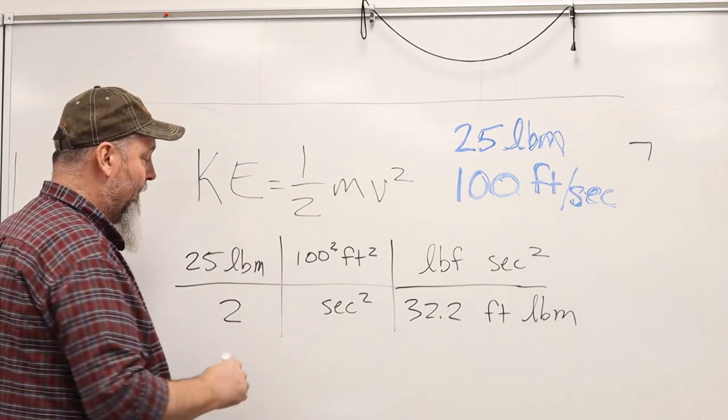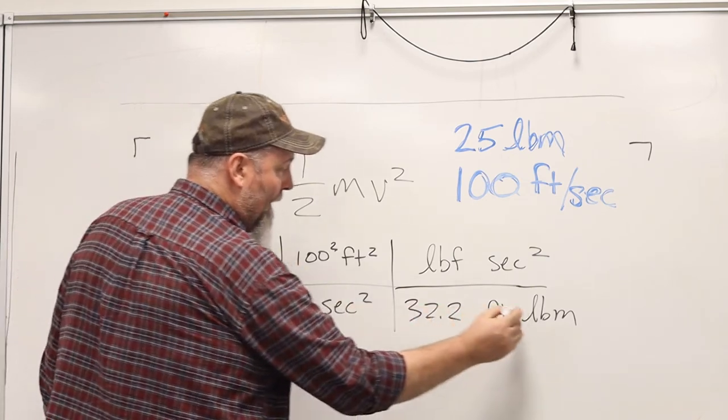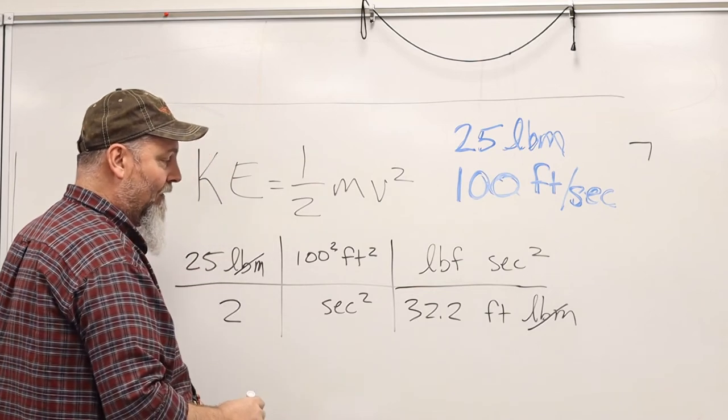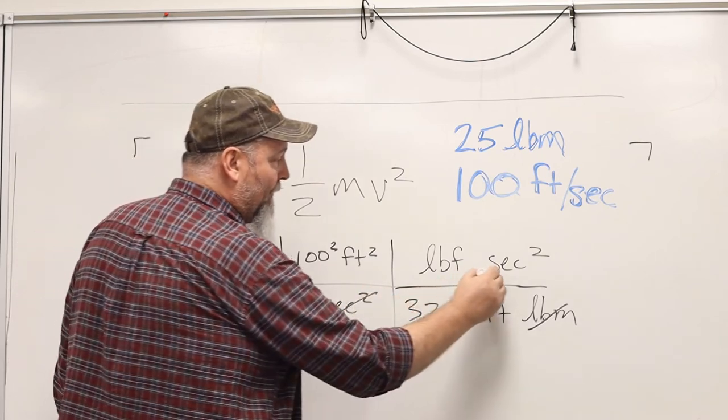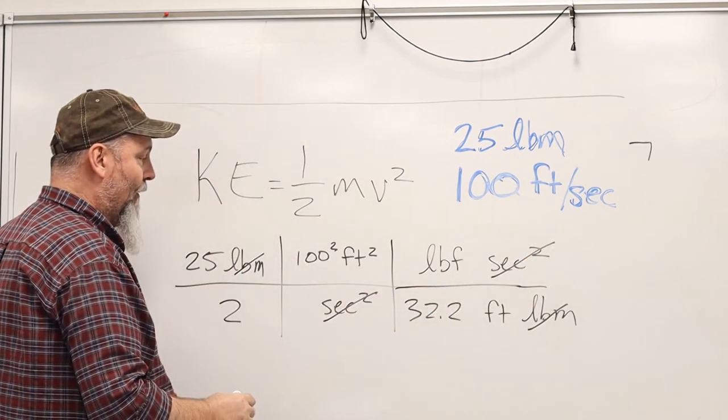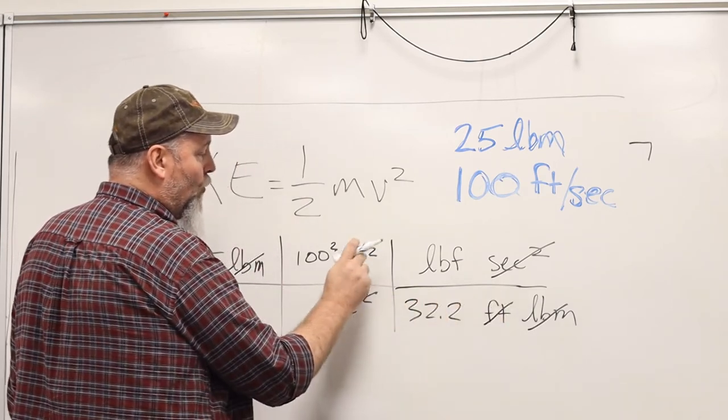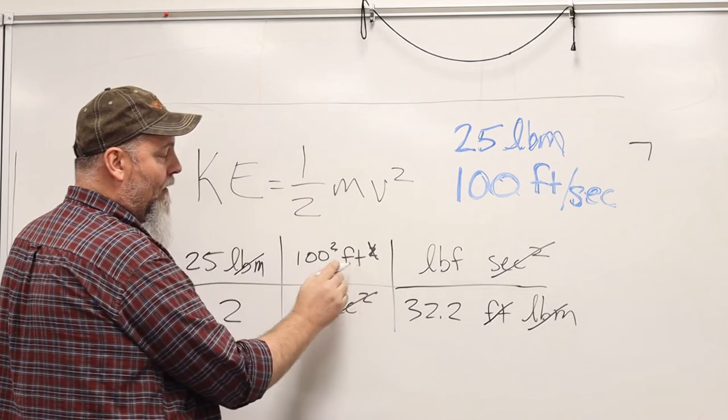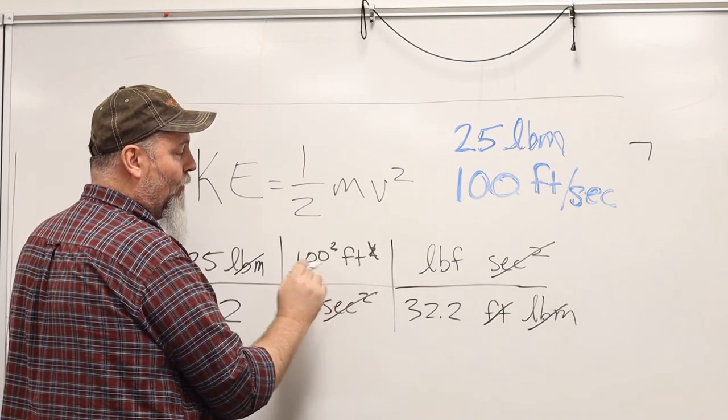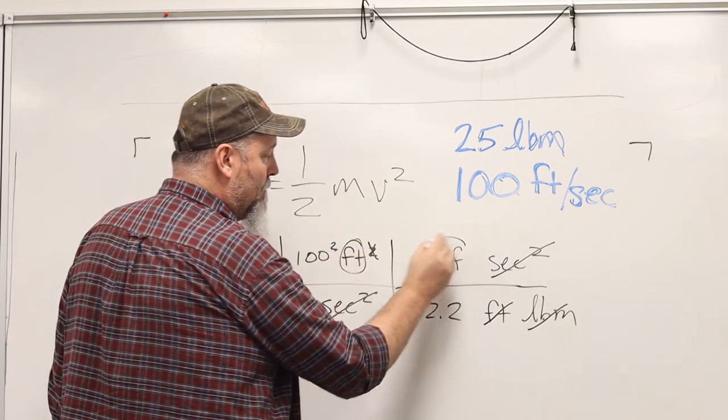Let's make sure we have the right units. Pounds mass, pounds mass, those cancel out. Second squared, second squared, cancels out. I've got a foot down here which removes the square, one of the two feet, right? So I'm left with foot pounds force.